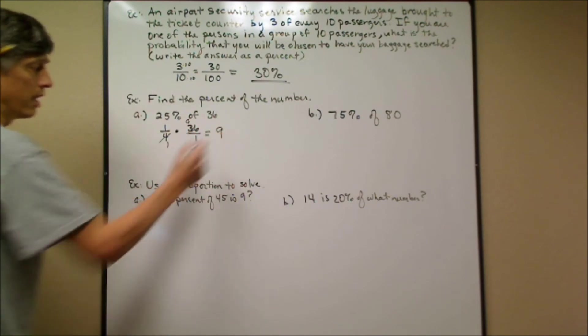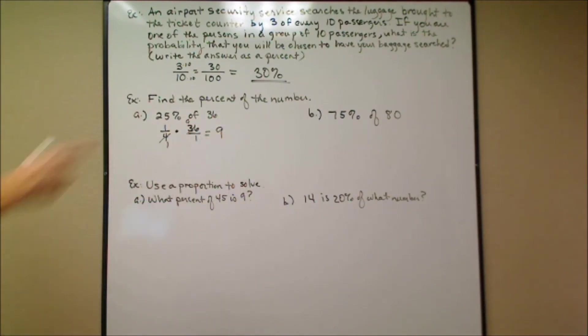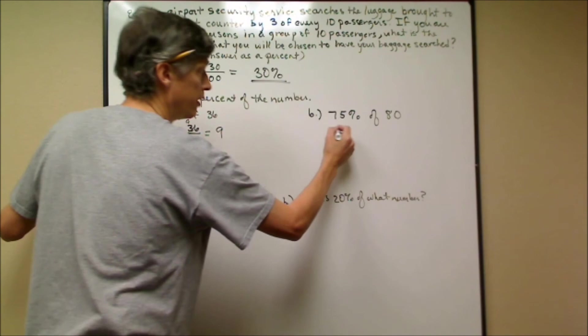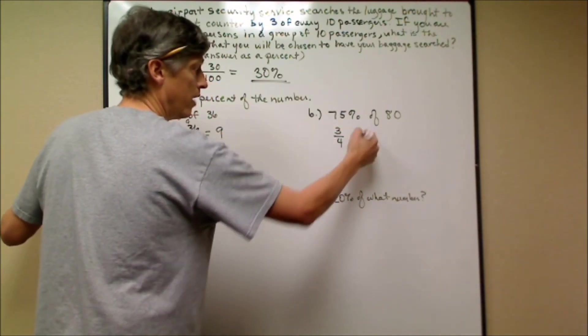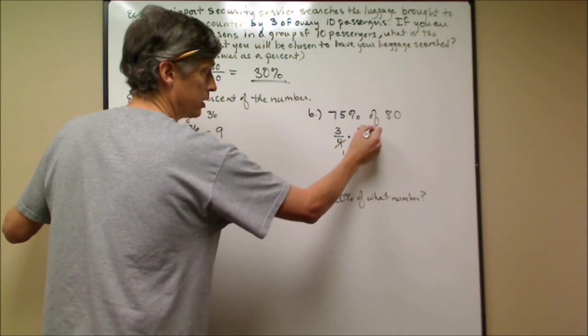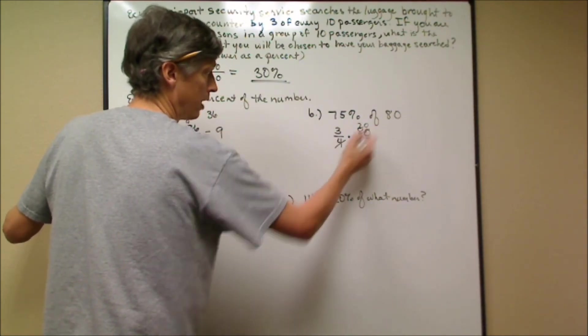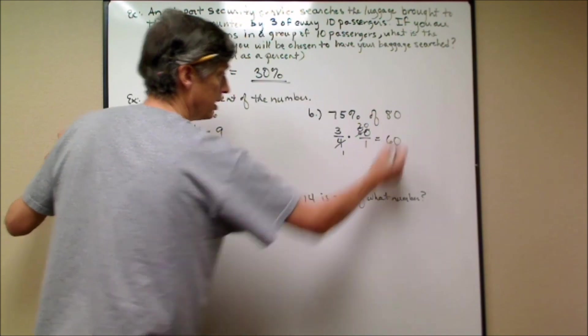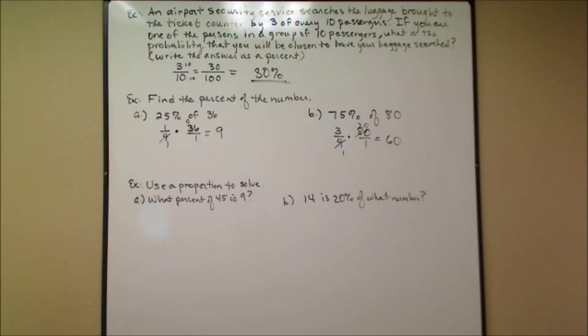And that's 9. 75%—that's 3/4. 'Of' means times. 80—I'll put it over 1. 4 goes into that once, goes into that 20. 3 times 20 over 1 is 60. So 75% of 80 is 60. Those are pretty direct problems because the percents were easy to convert into fractions.